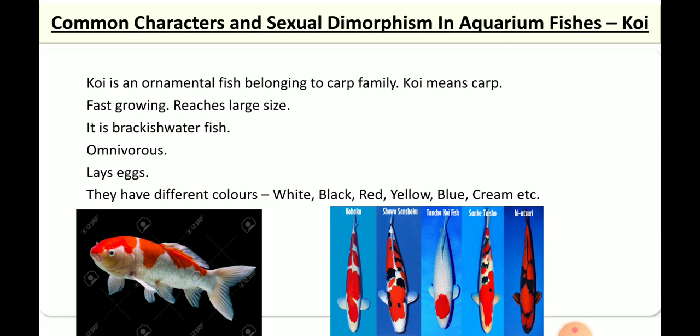Koi is an ornamental fish belonging to the carp family. It is a very fast-growing fish and reaches very large sizes. It is a brackish water fish, lays eggs, and is omnivorous. It has different kinds of coloration — white, black, red, yellow, blue, and cream. As you can see in this picture, they can be differentiated depending on their coloration.